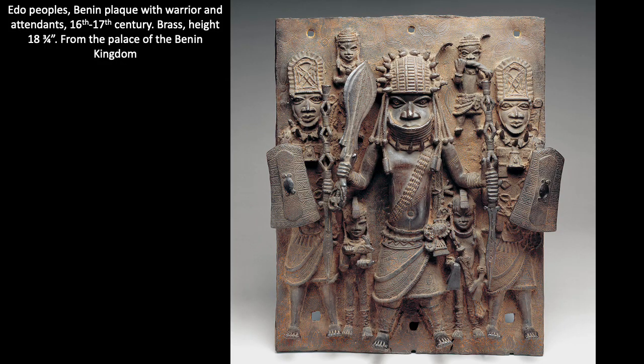The Edo Kingdom of Benin in present-day southern Nigeria was at its height between 1450 and 1700. The king, or Oba, lived with his court in a palace in the capital city. Benin Obas commissioned hundreds of brass artworks to reflect their power, including at least 900 plaques like this one that originally decorated the royal palace. These plaques depicted Obas, royal family members, soldiers, and dignitaries.